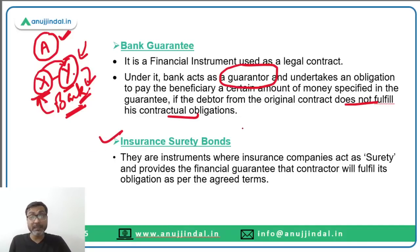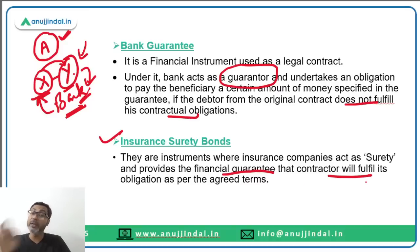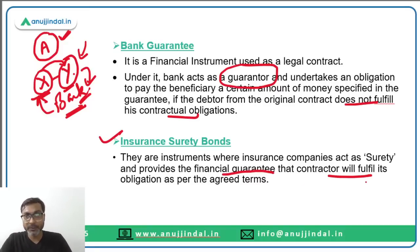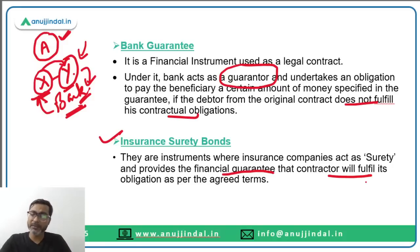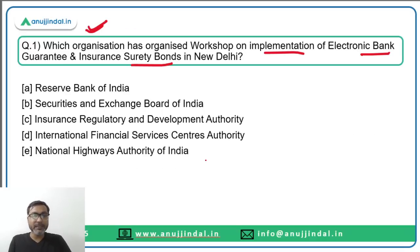Insurance surety bonds are another type of financial instrument where insurance companies act as surety and provide the financial guarantee that a contractor will fulfill its obligations as per the agreed terms. The correct answer to this question is National Highway Authority of India, option E.